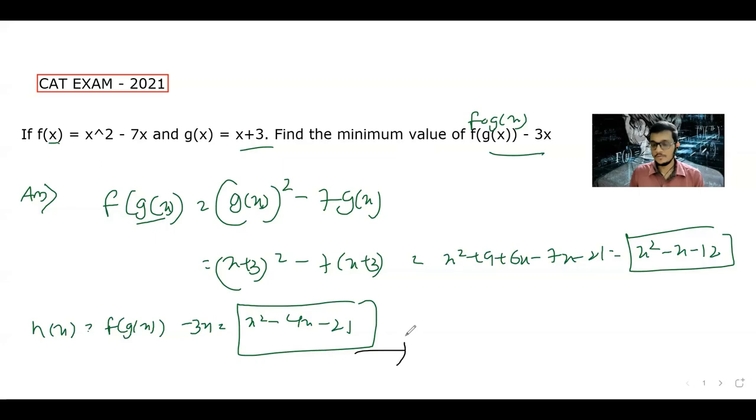You will know how to minimize. For minimizing, we take the derivative h dash x equal to 0. And at the point where it's 0, we will take the derivative h double dash x.